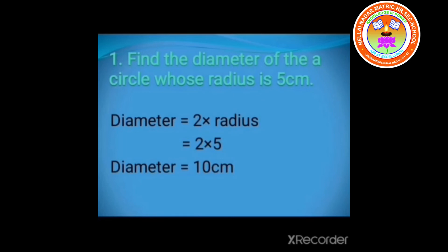Let us see some example. The first one: Find the diameter of a circle whose radius is 5 cm. Here, radius is given as 5 cm. What's the formula of diameter? Diameter is equal to 2 times radius. So, 2 into 5. 2 fives are 10. Answer 10 cm. So, diameter is equal to 10 cm.